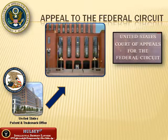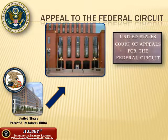The Federal Circuit is unique among the Courts of Appeals, as it is the only court that has jurisdiction based wholly upon subject matter, rather than geographic location. The Federal Circuit is an appellate court with jurisdiction to hear appeals from certain administrative agencies and appeals arising under certain statutes. Among other things, the Federal Circuit has exclusive jurisdiction over appeals from the United States Patent and Trademark Office.